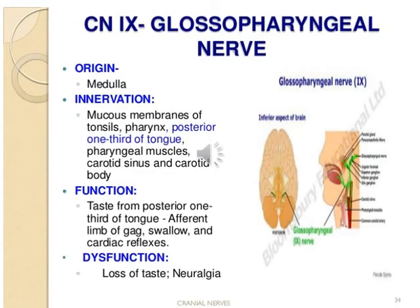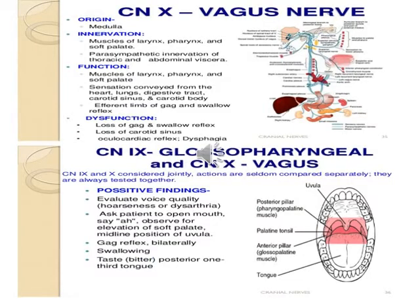The glossopharyngeal nerve originates from the medulla oblongata and innervates the mucous membrane of the tonsil, pharynx, and posterior one-third of the tongue, as well as the pharyngeal muscle, carotid sinus, and carotid body. The vagus nerve innervates the muscles of the larynx, pharynx, and soft palate, and conveys sensation from the heart, lungs, and digestive system, along with lower parasympathetic supply.